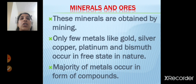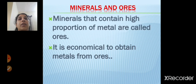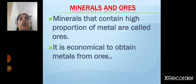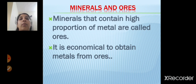Platinum is a silvery white metal and bismuth has got a reddish tinge. Minerals that contain a high proportion of metal are called as ores. It is economical to obtain metals from ores. Where there is a high proportion of metal in the minerals, they are called as ores, and we can obtain metals from ores easily because it is economical.